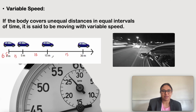So what is the difference between uniform and non-uniform speed? Uniform speed is when an object travels equal distance in equal intervals of time. Non-uniform speed is when an object travels unequal distance in equal intervals of time.